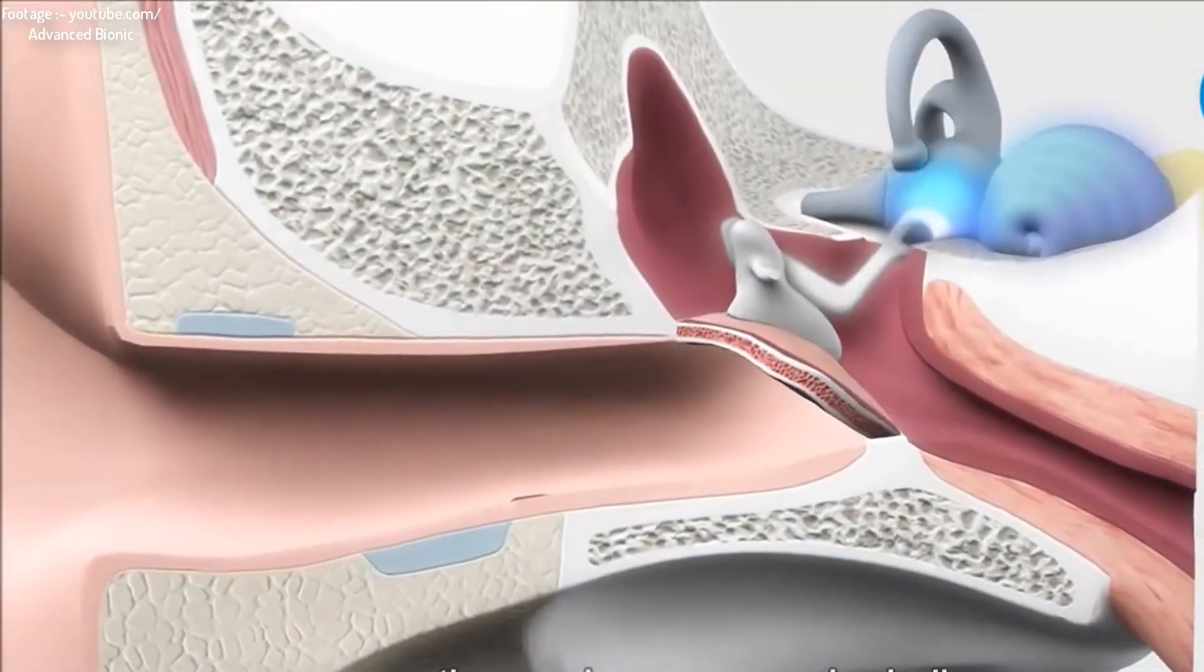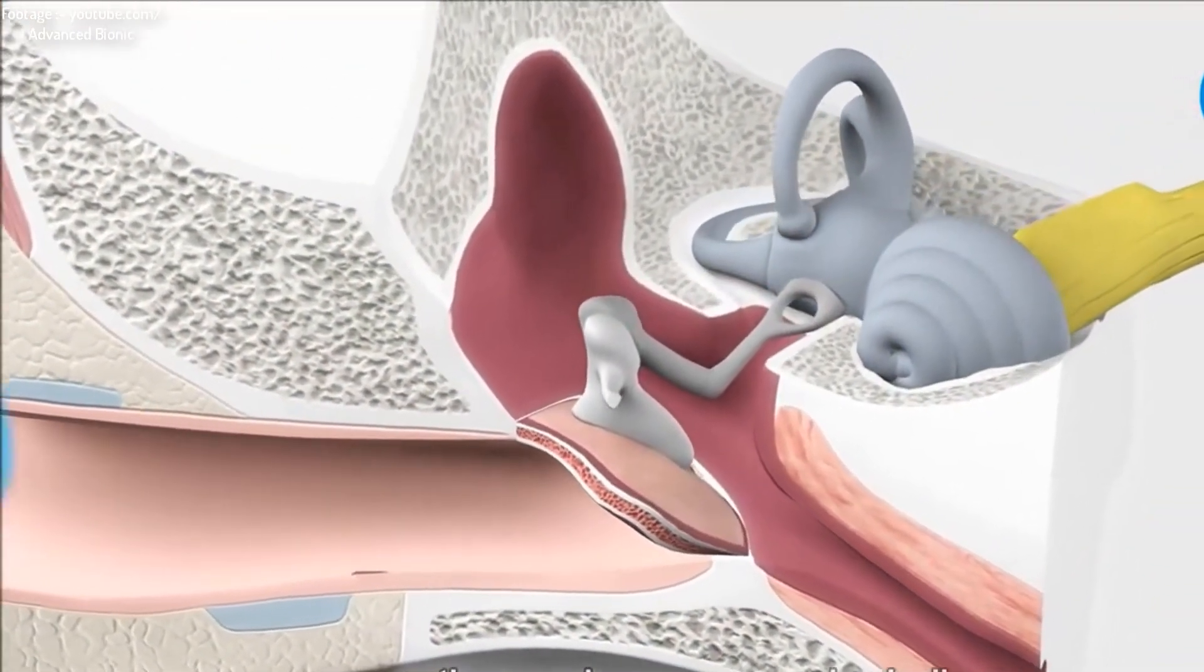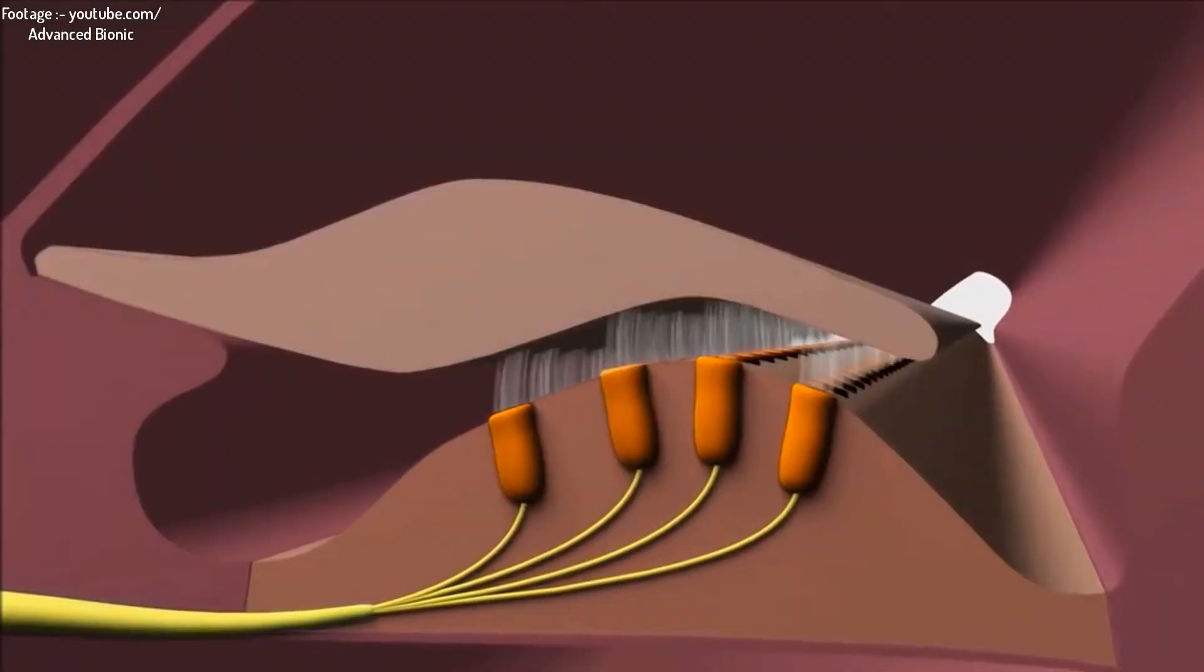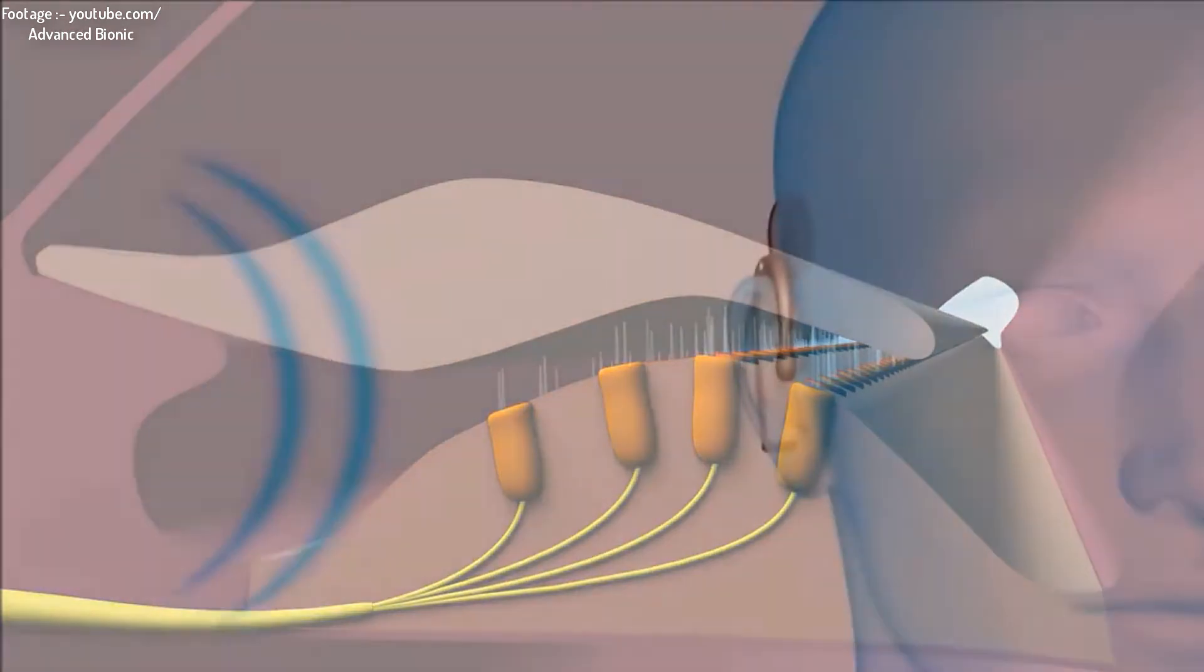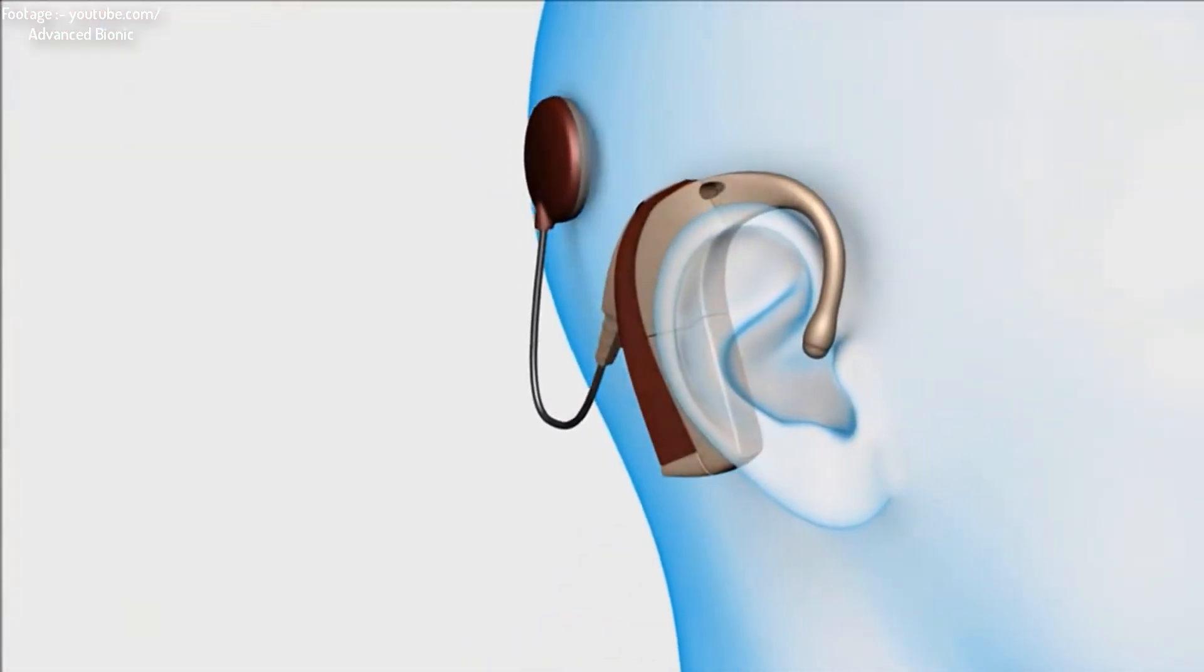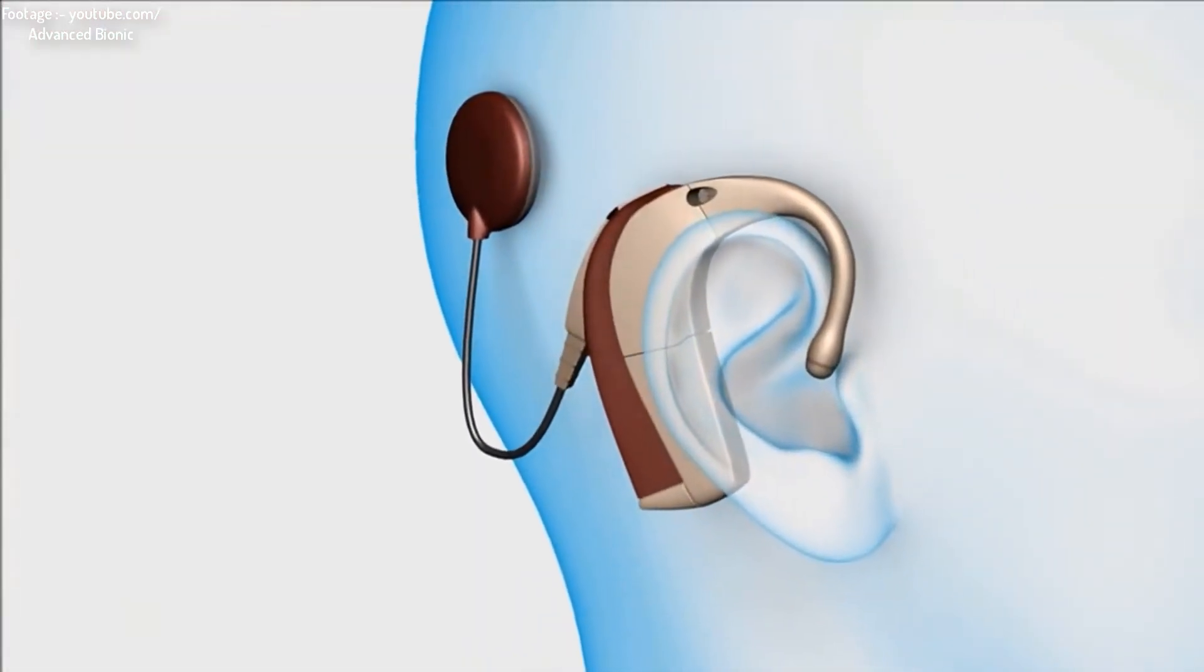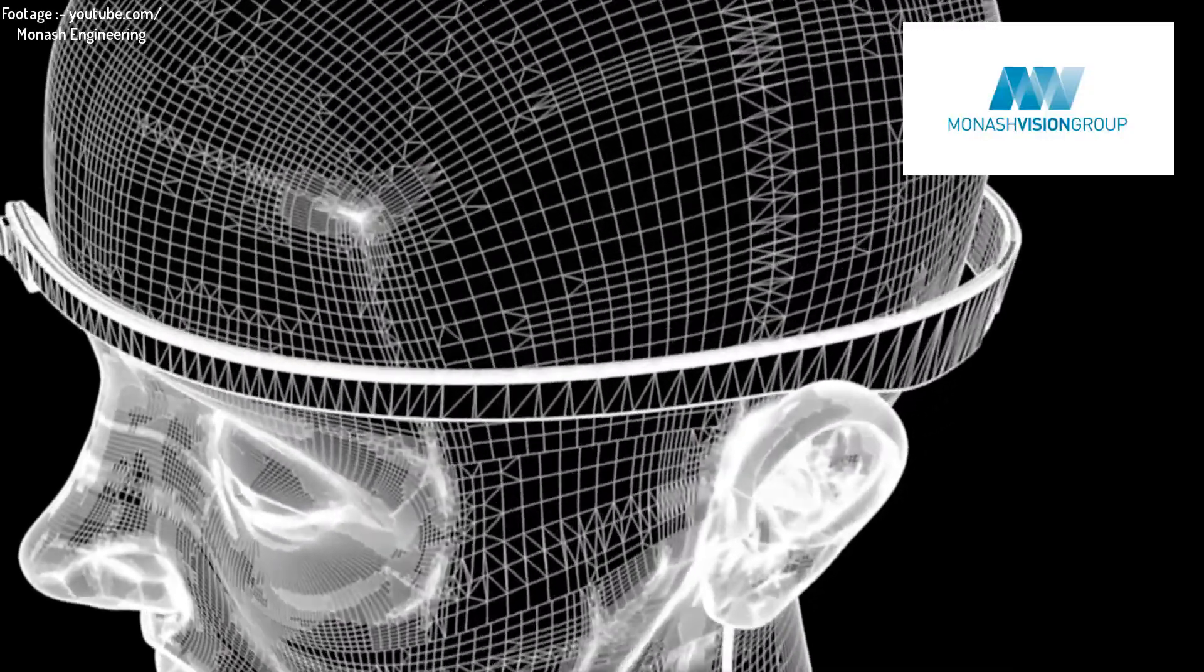When the cochlea, a sensory organ of hearing, is malfunctioning due to absence or reduction in cochlear cells, a device can be used which carries out the function of cochlea by stimulating auditory nerves directly.